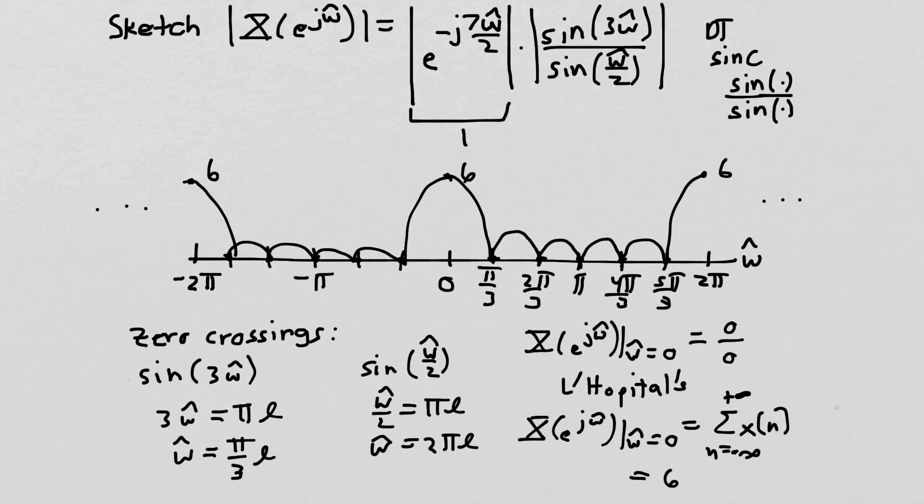And then I found the zero crossings just by knowing that sine goes to zero whenever the argument is a multiple of pi. So I solved for that expression for both the numerator and the denominator. The denominator is what gave me the two pi periodicity. The numerator is what gives me the zero crossings at multiples of pi over three. So this is a rough sketch. And again, I want to emphasize my sketch doesn't quite look symmetric here, but this should be symmetric about the origin. So that is how you sketch the frequency response of a simple square pulse using knowledge of what sine over sine looks like when you sketch it, being able to find the zero crossings and find the max value.